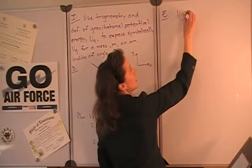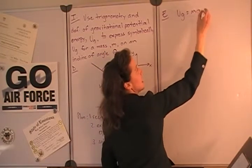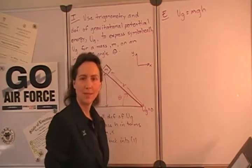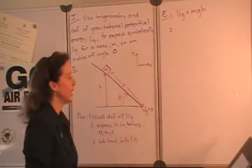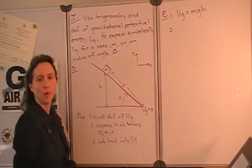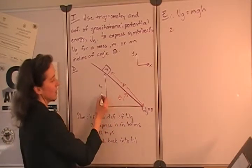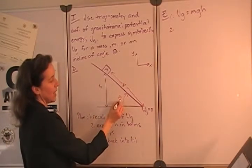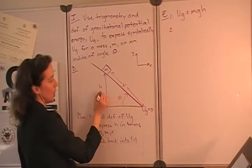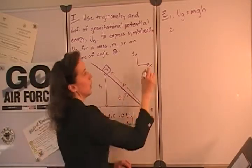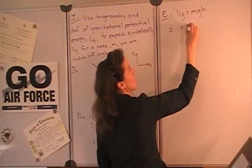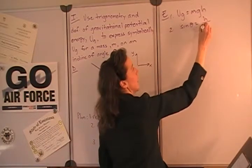So the gravitational potential energy is the mass times gravitational acceleration times the height. We want to consider the relationship between the height and other parameters of the problem. Specifically, we can see that the sine of this angle theta is going to be the opposite side over the hypotenuse. So sine theta can be expressed as h over x.